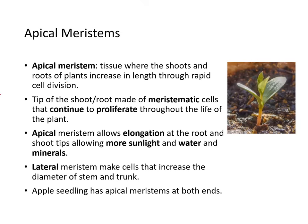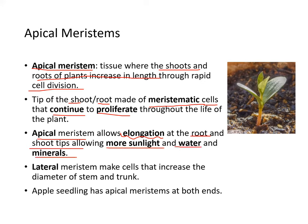Plants also produced an adapted apical meristem — a tissue where shoots and roots of the plant increase in length through rapid cell division. The tip of the shoot or root is made up of meristematic cells, which continue to proliferate throughout the life of the plant. Apical meristem allows elongation at root and shoot tips, allowing access to more sunlight, water, and minerals. The lateral meristem makes cells increase in the diameter of the stem and trunk. An apple seedling has apical meristem at both ends.